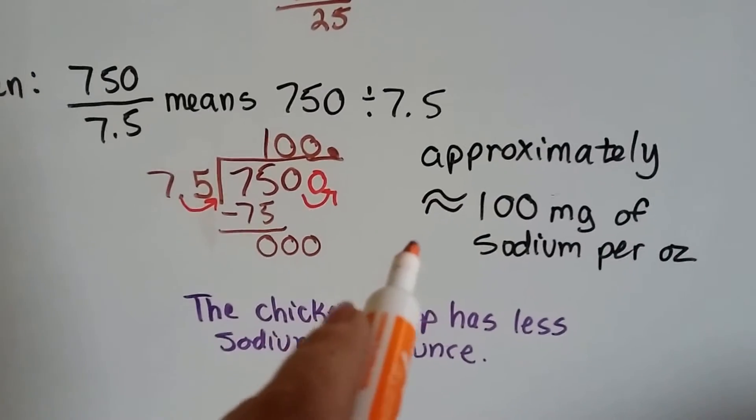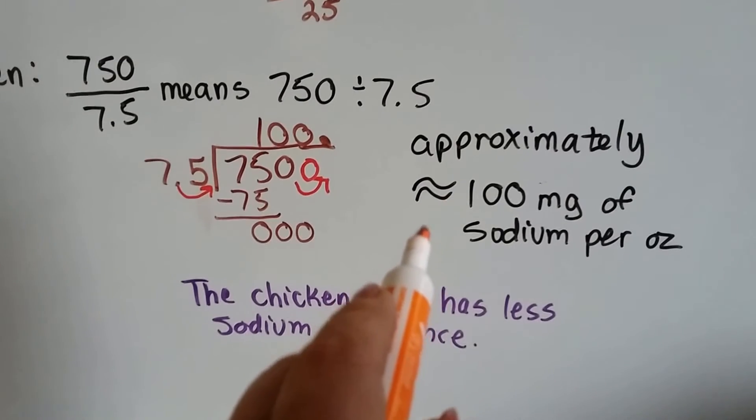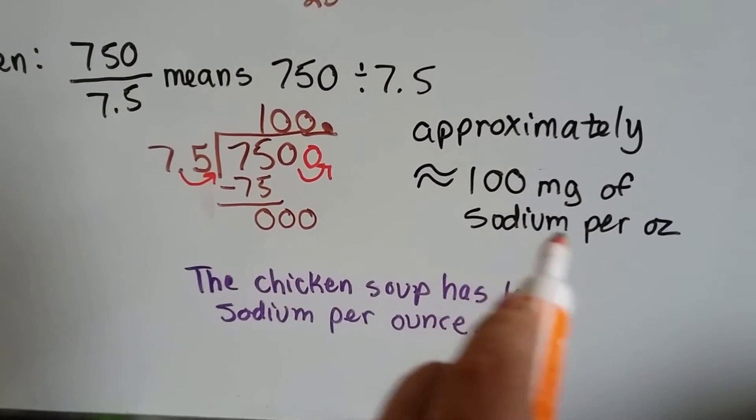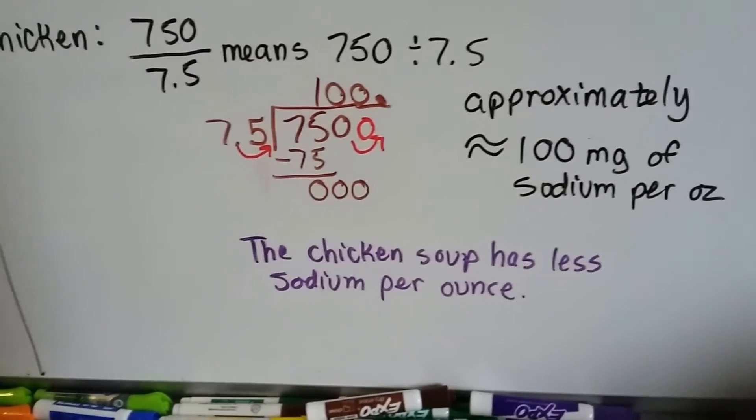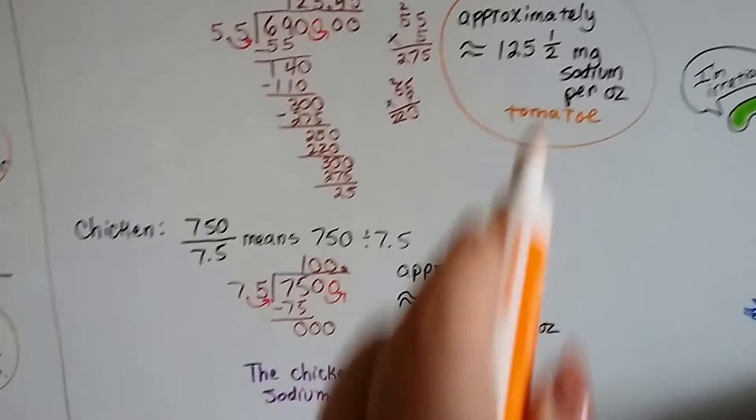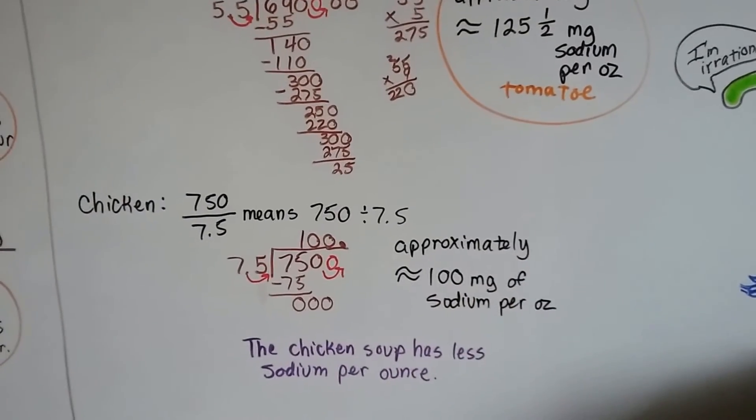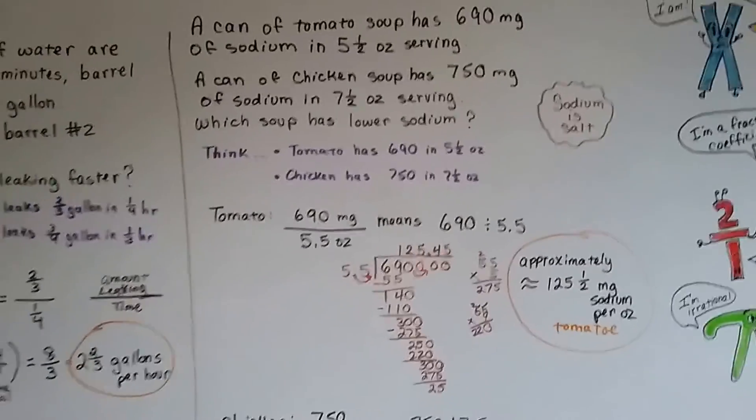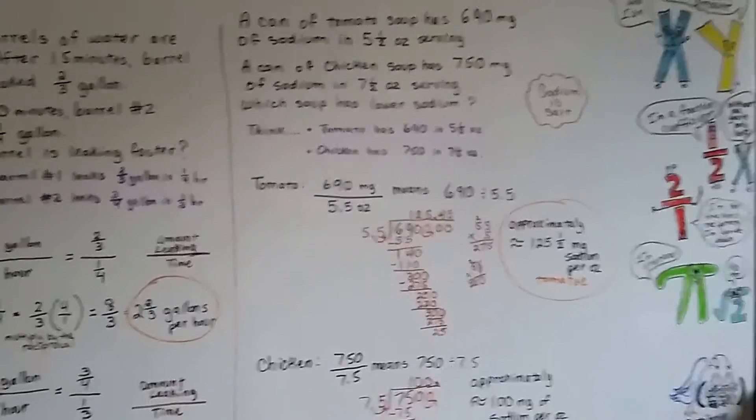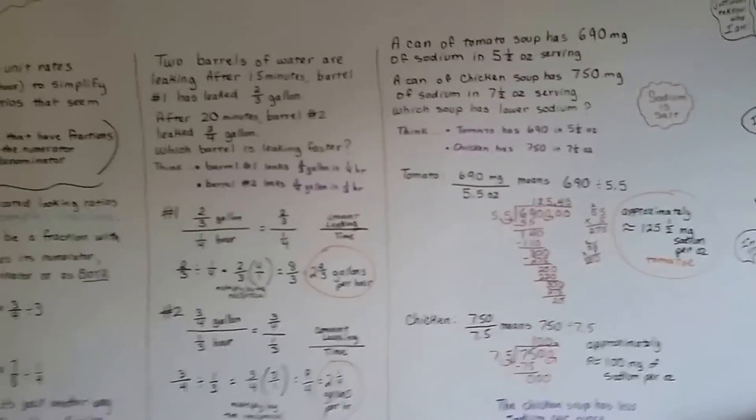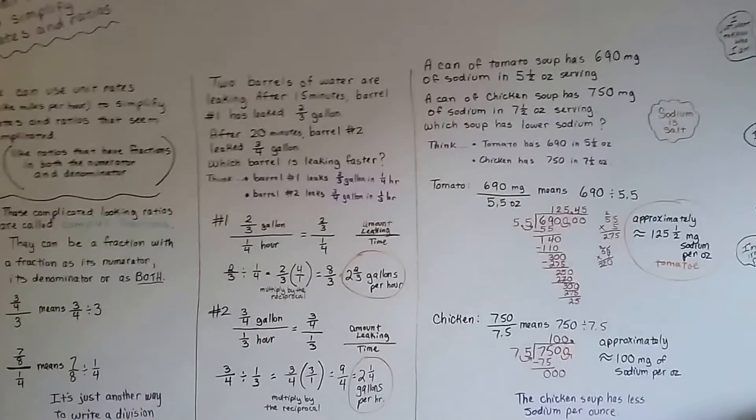So it approximately has 100 milligrams of sodium per ounce. So the chicken soup has less sodium per ounce than the tomato soup. That had 125-and-a-half milligrams. This only has 100 milligrams. And you want to know what? I actually got those off of two cans in my kitchen. Yep. Two cans of soup in my kitchen in my cabinet. I copied that off the label. So those are real facts.